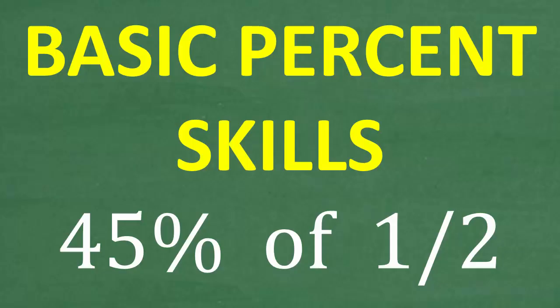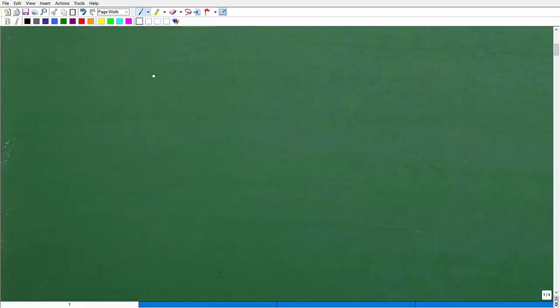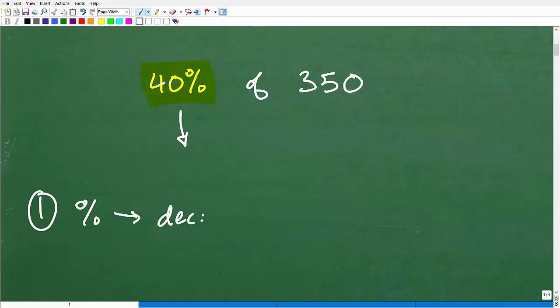So 45 percent of one half - again, don't be shy about using a calculator. Let's just review here how to find a percent of a number. Let's do something real easy: 40 percent of, I don't know, 350. I'm not going to do this problem, but I am going to explain the basic process of how to find a percent of a number. The basic process is this: we want to take this percentage, we have 40, and we want to rewrite it as a decimal. So that's skill number one - you're going to have to go from percent to a decimal.